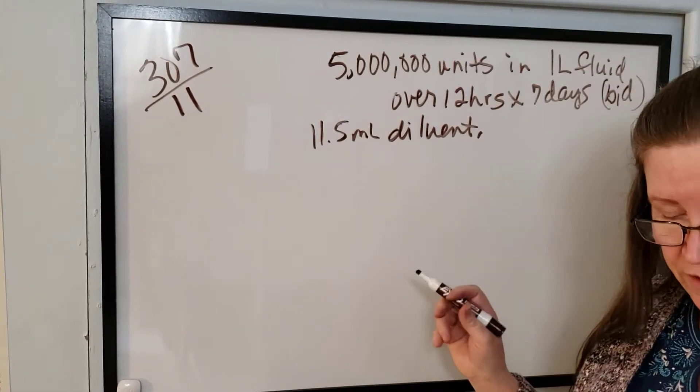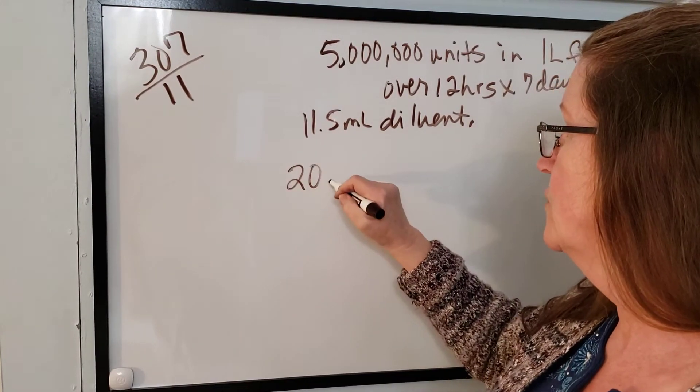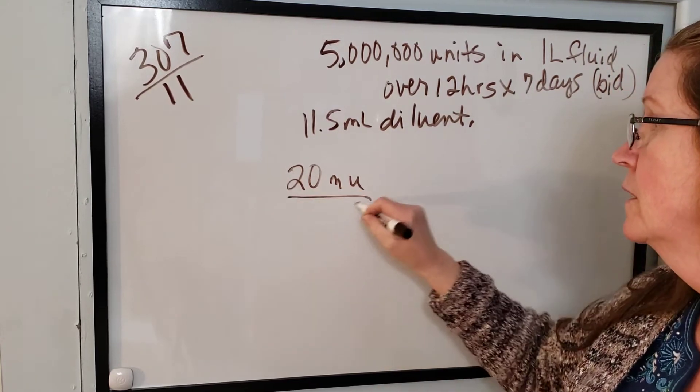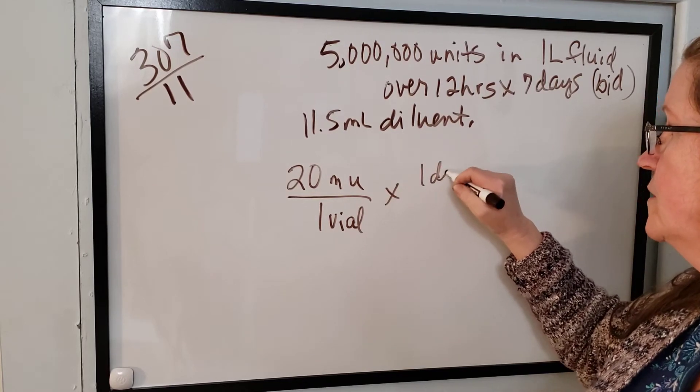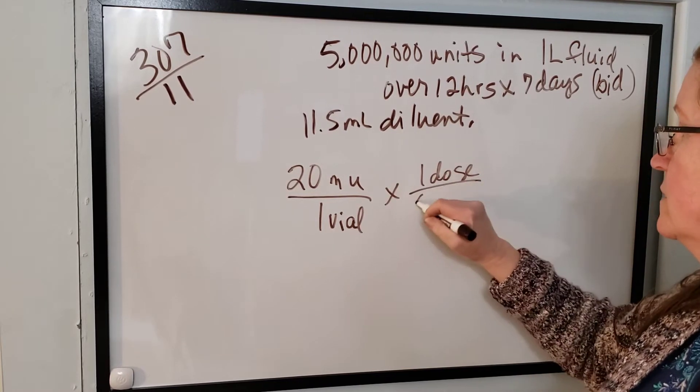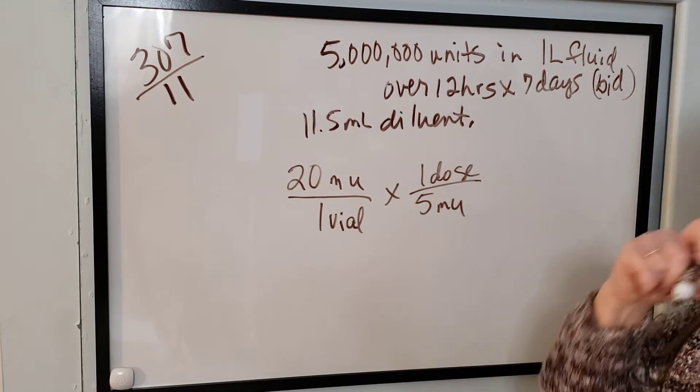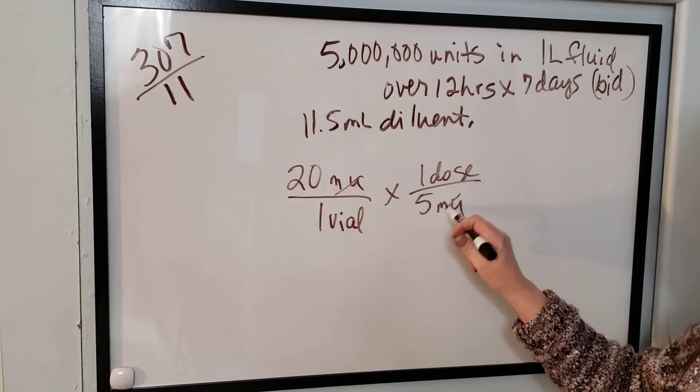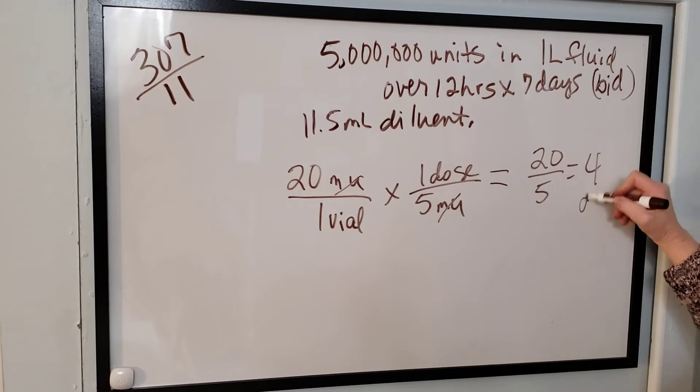So in that case, one thing we can do with these million units is we can take 20 and write MU for million units per vial. And then one dose is 5 million units. So now we're not writing all the zeros. Those six zeros are represented by MU and they cancel out. So it's 20 divided by 5 and that means you can get four doses in one vial.